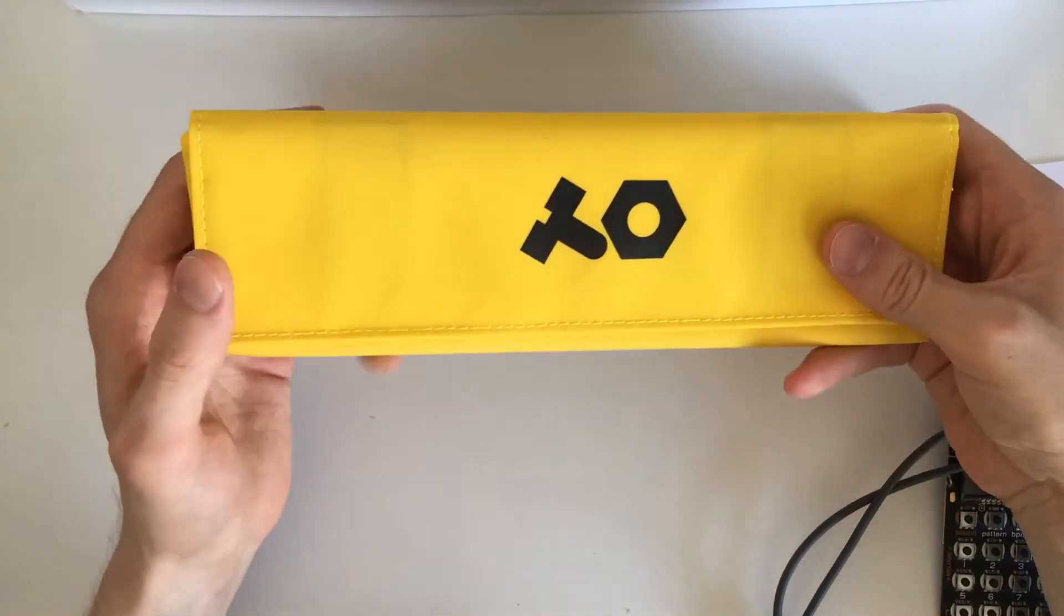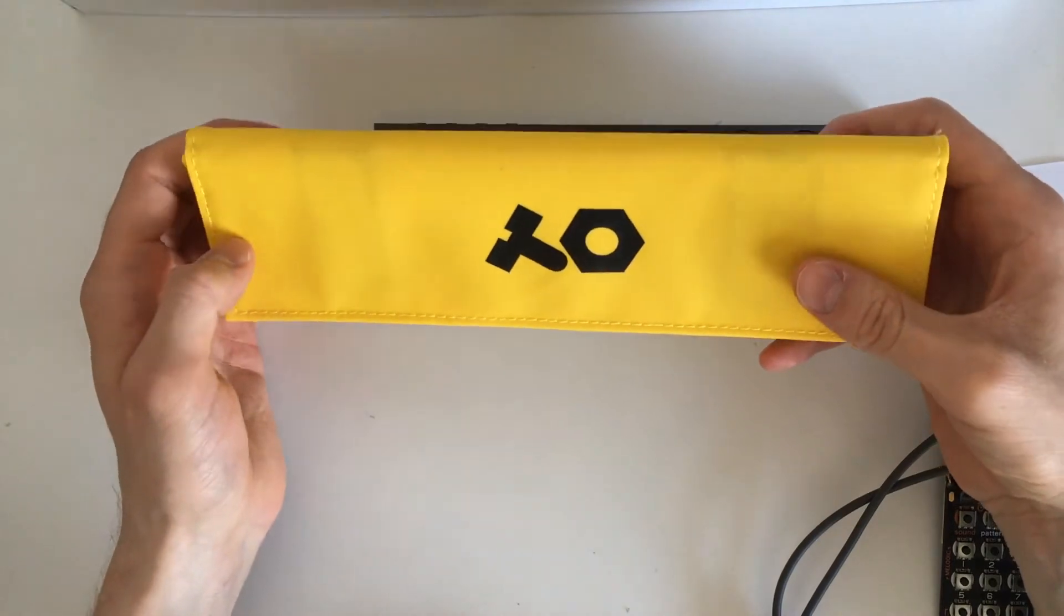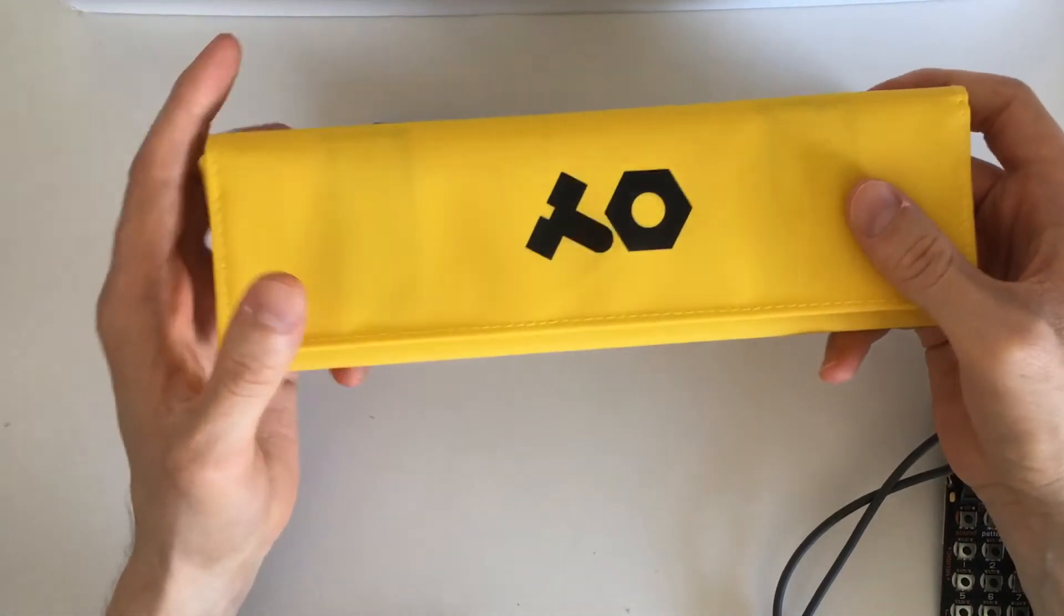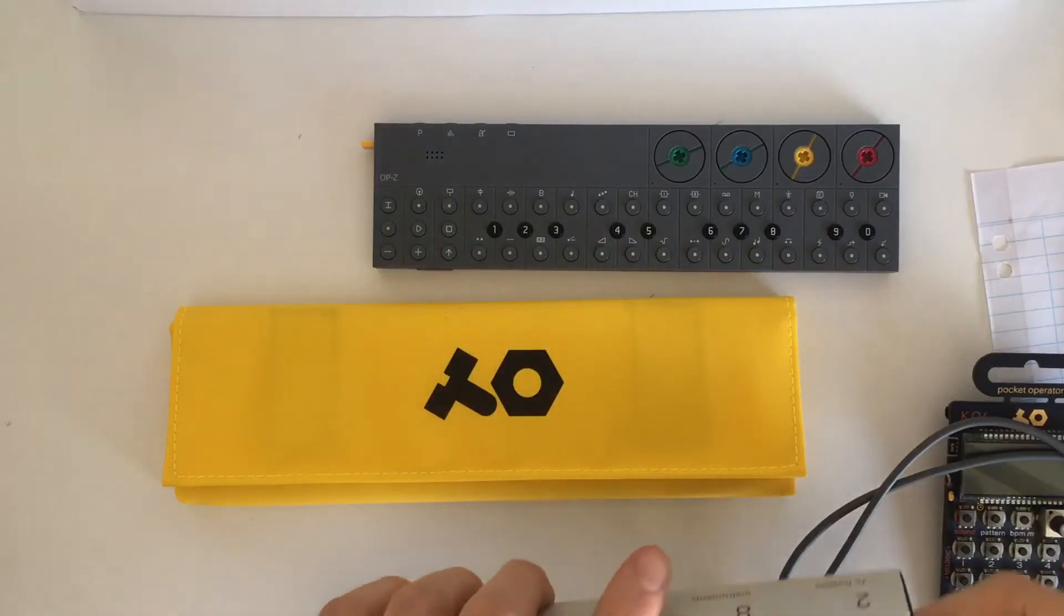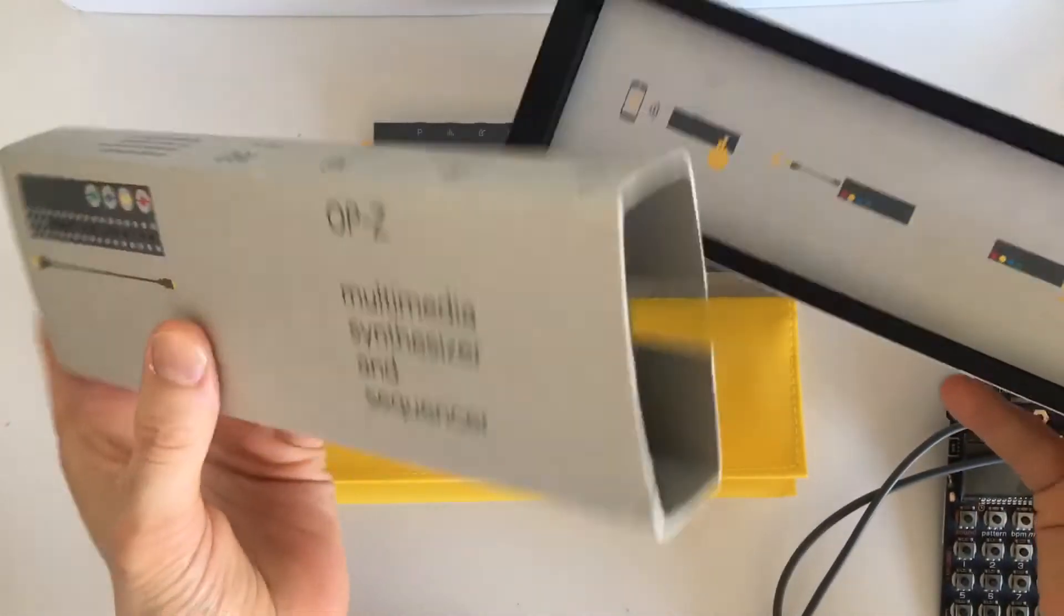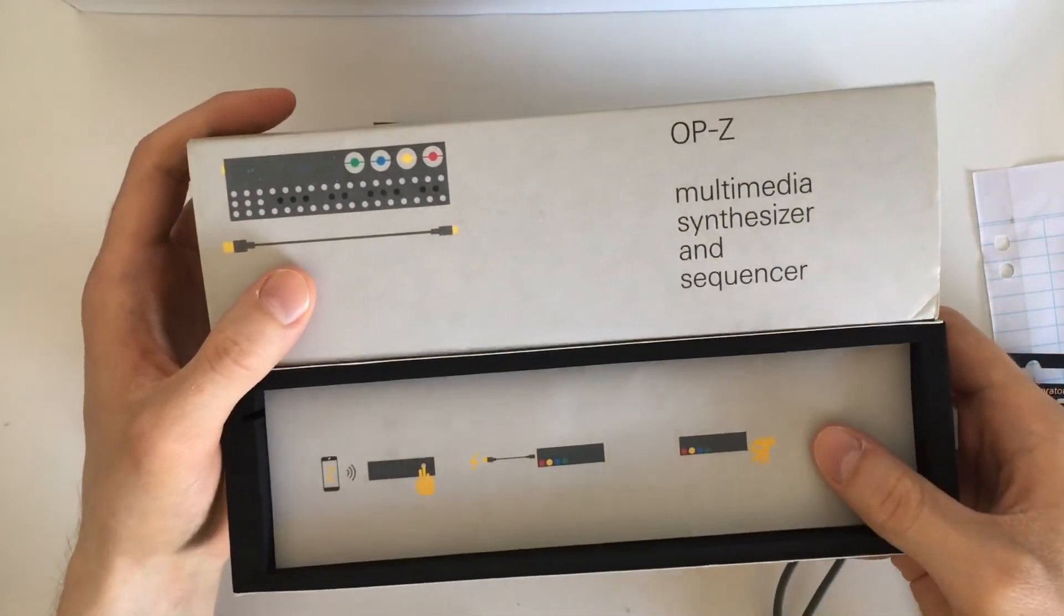It is the cheapest official case and while it wouldn't protect very much from fall damage, it'll probably protect from other objects scratching it in a backpack. But then again the box the OP-Z comes in originally has padding and stuff so that would probably do a better job at that anyway.